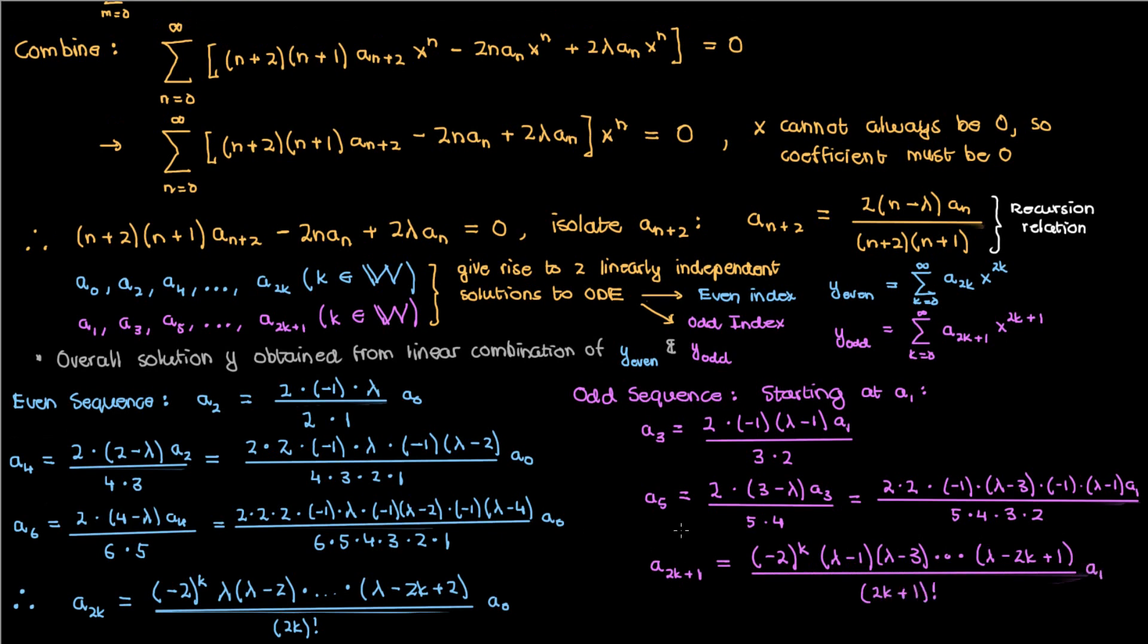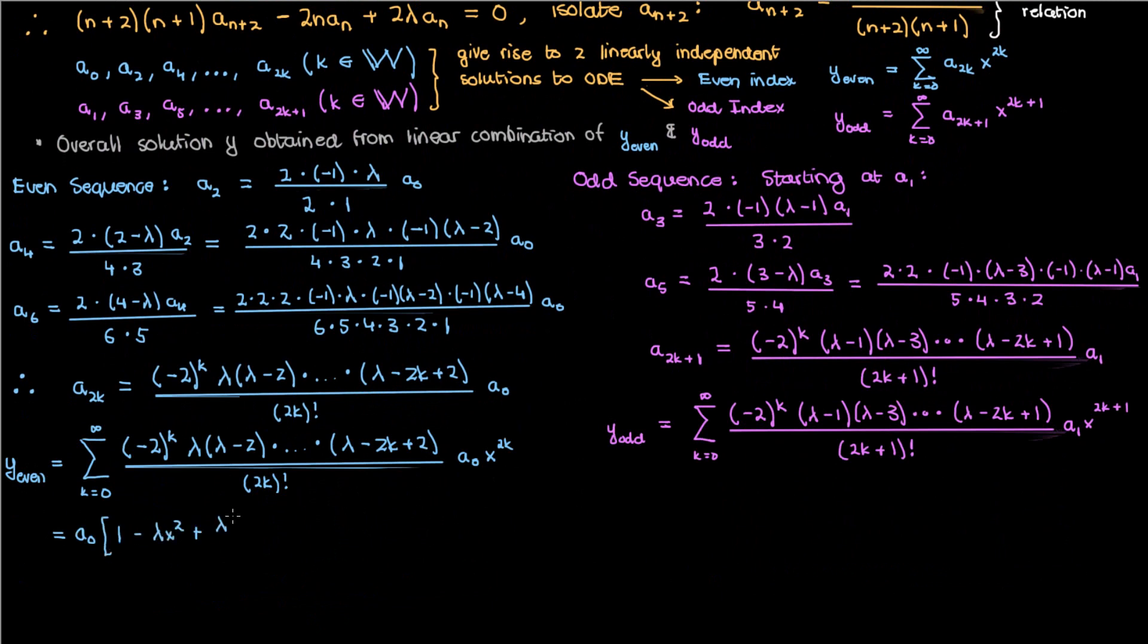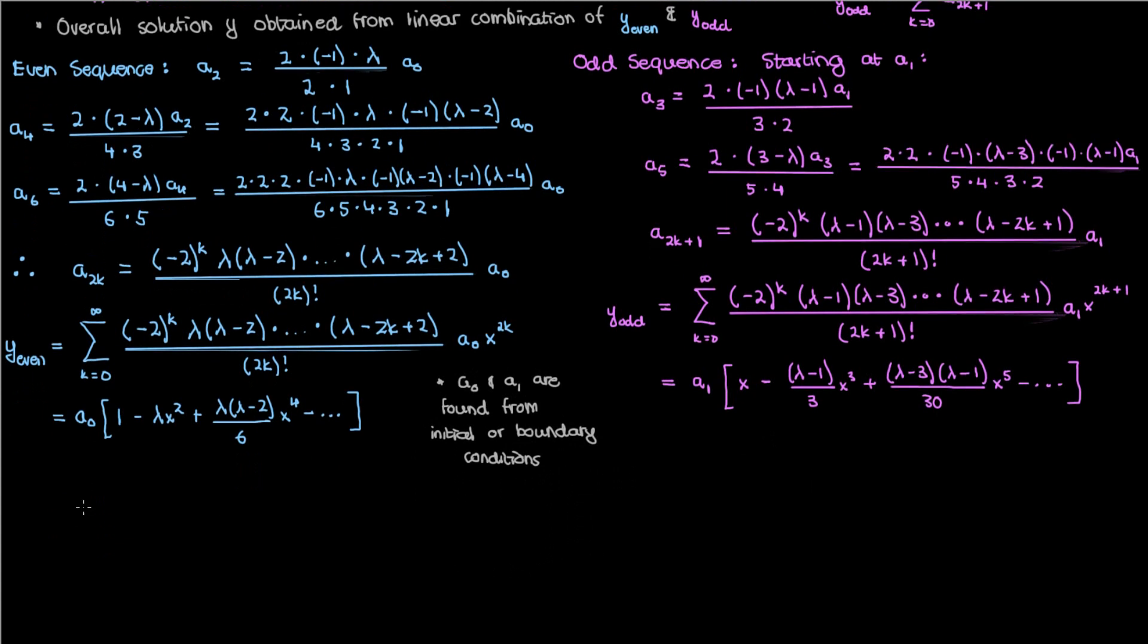So now that we've got formulas for our odd coefficients and even coefficients, we can write down our even solution y_even and our odd solution y_odd. We can also expand out the first few terms in each of these solutions to get the following. Of course, the a_0 and a_1 are common to all the terms of y_even and y_odd respectively, and they represent unknown constants that are found from any initial or boundary conditions. Let's take a moment now to look at the formulas for our two linearly independent solutions, y_even and y_odd.